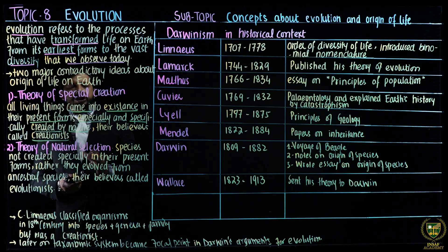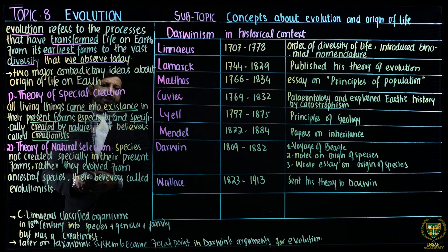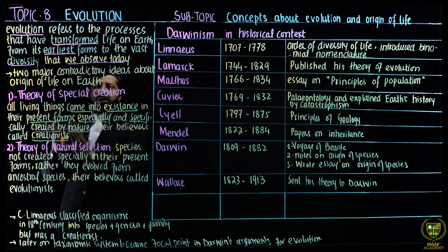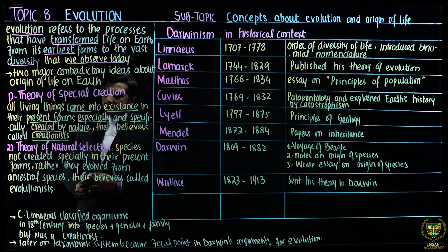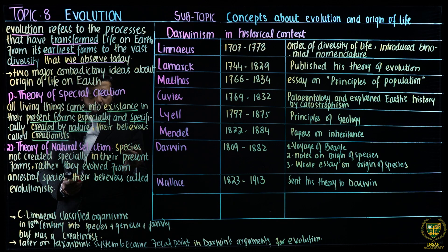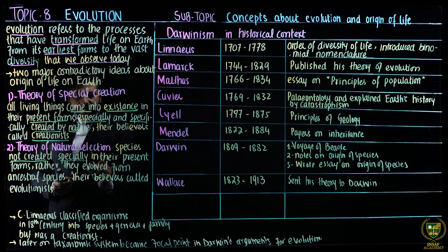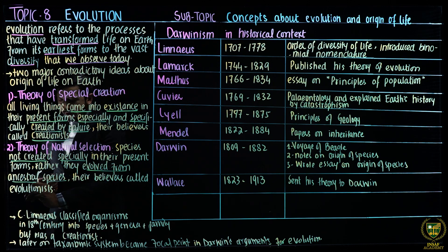The second school of thought, which contradicts the creationists, is the theory of natural selection. It says that all the existing species were not specially formed by nature. Rather, they have transformed from their ancestral species. According to the theory of natural selection, species were not specially created in their present forms — rather, they evolved from ancestral species. Their believers are called evolutionists.